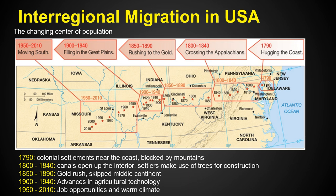From the 1800s to 1840, we start to see the population center move west. There are still people living along the coast, but the average shifts westward as we get better means of transportation. The big one is canals — canals that open up the interior. Settlers learn to make use of all the trees in these areas and build their housing from that. As people learn to use their surroundings, they use the canals and open up the interior, and you start to see people crossing the Appalachians from the 1800s to the 1840s.